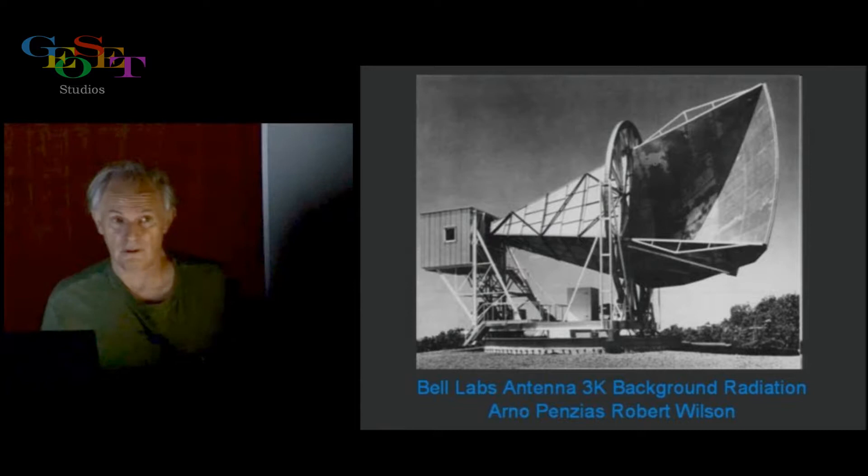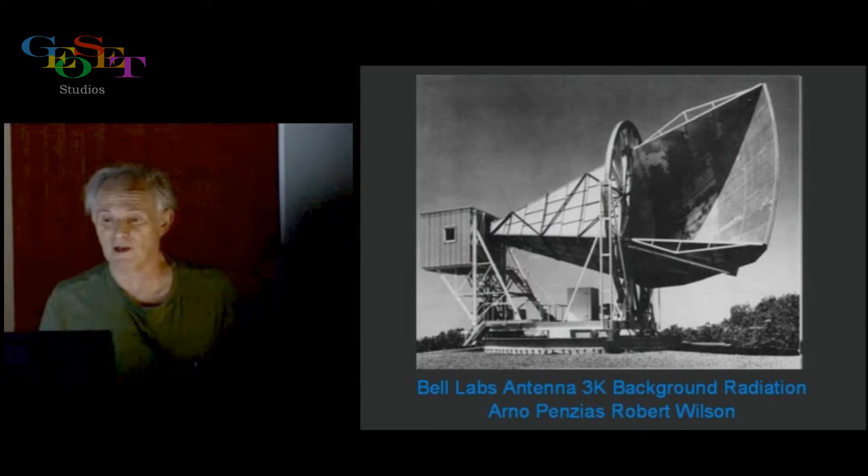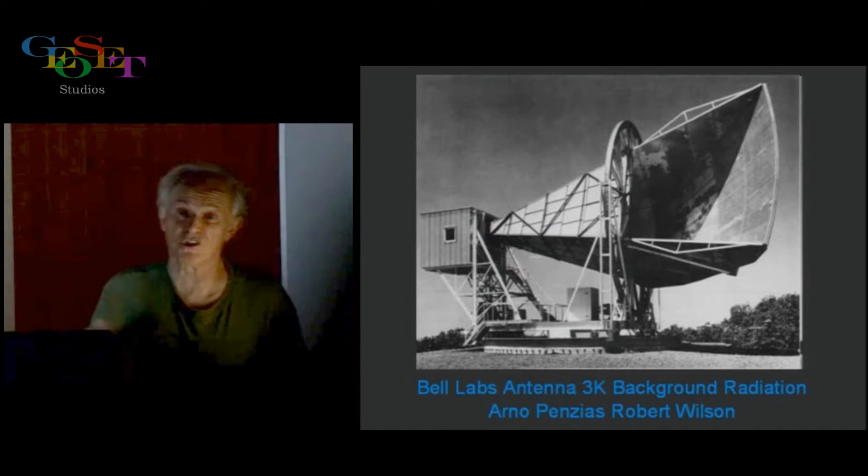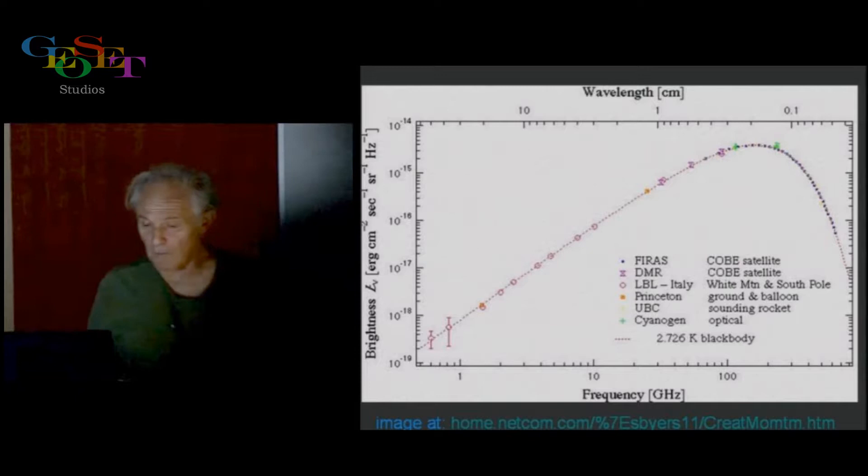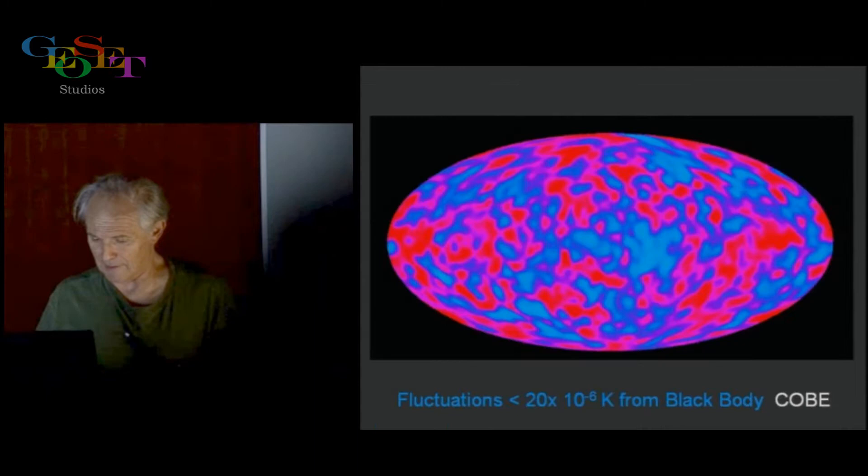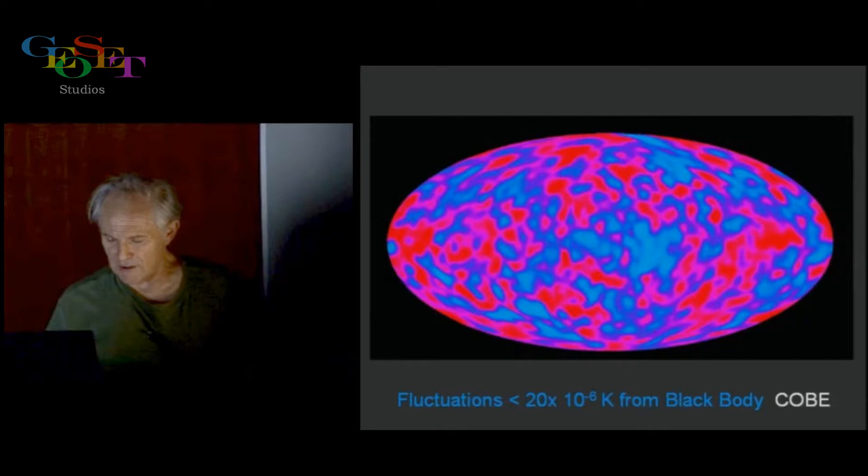But anyway, it turned out the signal was a three degree background. They didn't know this, but Dickey in Princeton, only 30 miles away, was scooped because he was building a detector to try to see the remnants of the Big Bang, which had been predicted to be something like 10 degrees Kelvin. They found that it was three degrees K. Now some of you may know that this is the black body radiation left over from the Big Bang. It's the strongest evidence we have that there was a Big Bang 13.7 billion years ago. The Kobe satellite has shown this. This is the universe. According to this, it's basically no fluctuation greater than 10 to the minus 6. So it's pretty close to black body radiation.